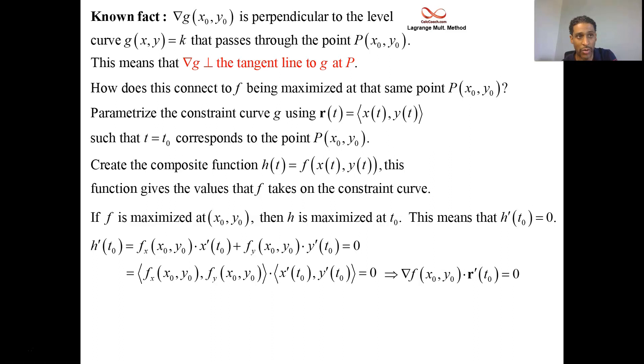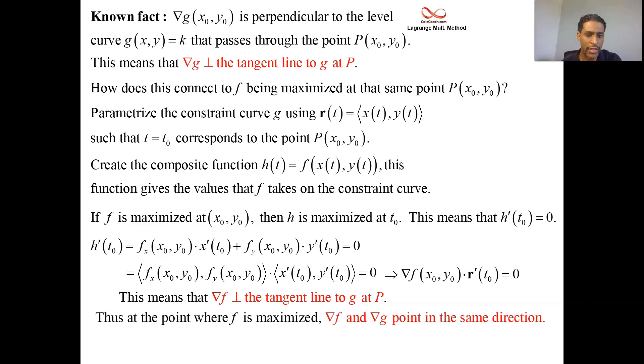Whenever two vectors are dotted to be equal to zero, then they're orthogonal. The r' is the tangent vector, and what they're saying is the gradient is orthogonal to the tangent vector. So if the gradient of f is orthogonal to the tangent line or tangent vector at that point, and the gradient of g is also orthogonal to the tangent line at that point, two vectors orthogonal to the same vector are parallel to each other. They point in the same direction. One is a scalar multiple of the other.